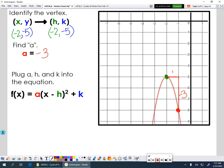So my a value is negative 3. And we had that negative sign in there ahead of time because we saw our parabola open down. And then finally, we're just going to plug everything in here. So my a value is negative 3.